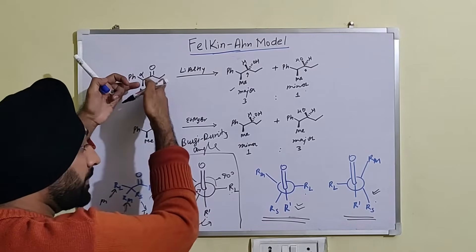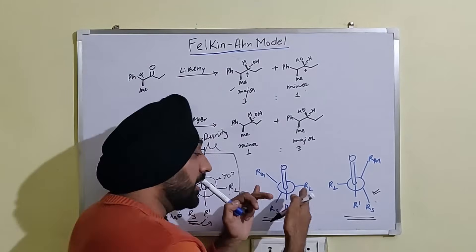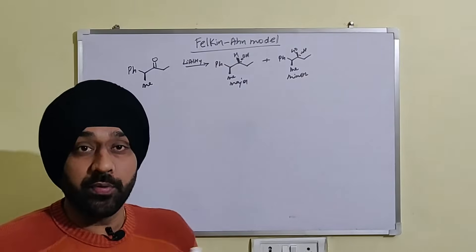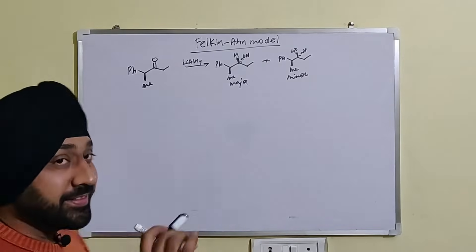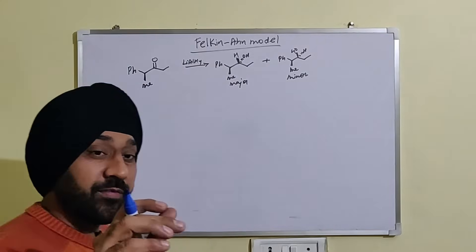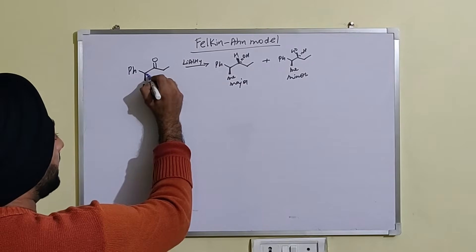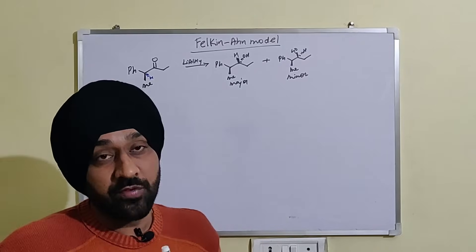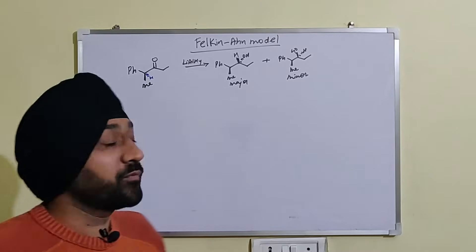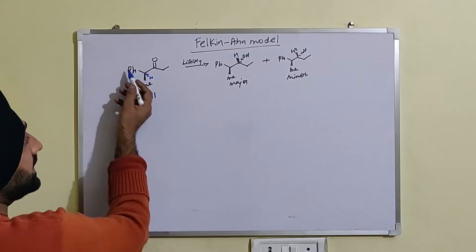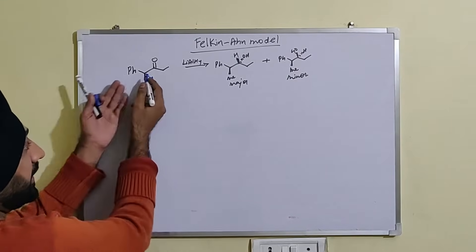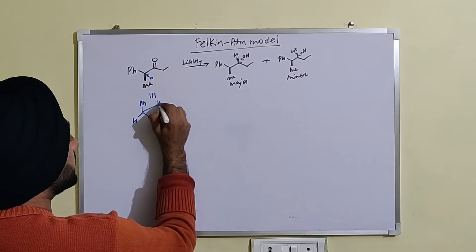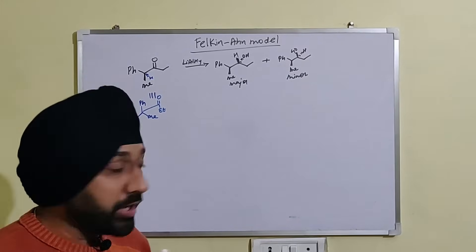Now we are going to take up an example and draw the appropriate Felkin-Anh model to predict the product. The starting point: what I generally do is convert the structure into a Sawhorse conformation, which eases a lot of problems. So if I convert this into a Sawhorse conformation, I understand that the phenyl group is in the plane, the methyl group — since this is beta — is coming out of the plane, hydrogen is going to the back side, and behind we have the carbonyl with an ethyl group.